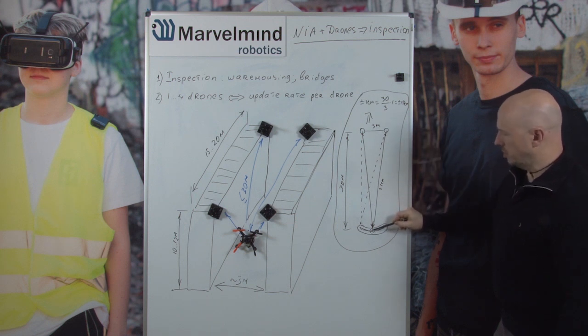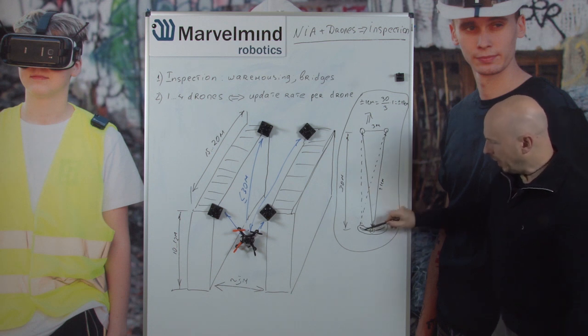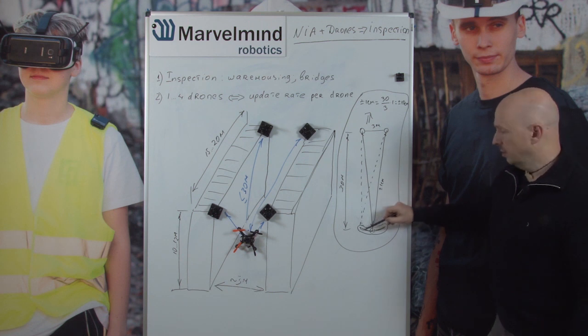It means that you will have very precise height but pretty imprecise in this direction. Let's call it Y direction. Why? Because the distance here, here, and here would be almost the same.